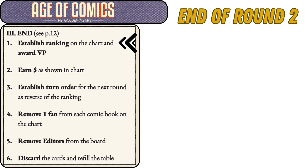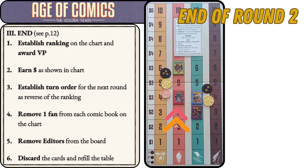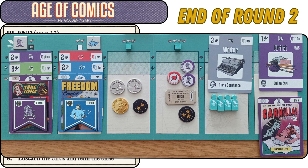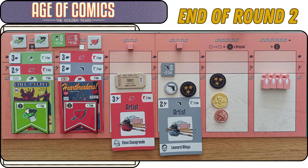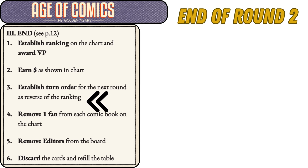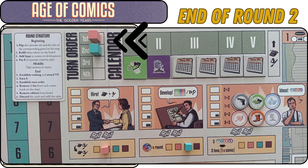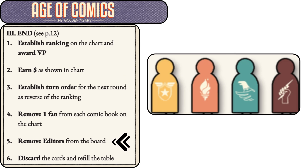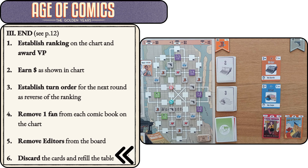End of round two. Step one: establish ranking on the chart and award victory points. Step two: earn money as shown in the chart. Firm A — Salmon — gains a three-star victory point for having a comic in first place and gains six dollars in total revenue from their two printed comics. Firm B — Teal — gains a two-star victory point for second place and gains five dollars in total revenue. Step three: establish turn order as the reverse of the ranking. Step four: remove one fan from each comic, reflecting reduced demand over time. Step five: remove editors from the board. Step six: discard the cards and refill the table.